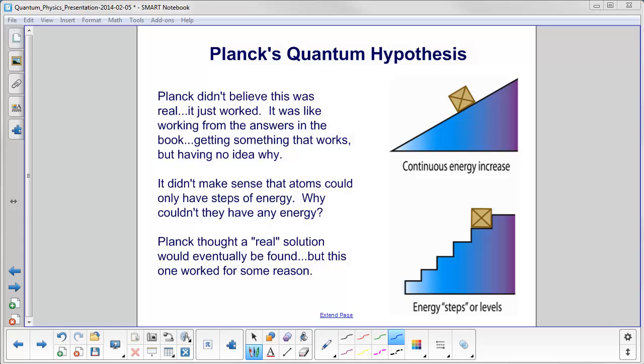It just didn't make sense that atoms could have only steps of energy. Why couldn't they have any energy? For example, what this is telling us is that if you're trying to get a box from here to here, there's no way you can do it by just sliding it along the incline because the energy changes pretty continuously, at least at the macro level that we deal with, with a box and an incline. It says the box actually has to go upstairs.